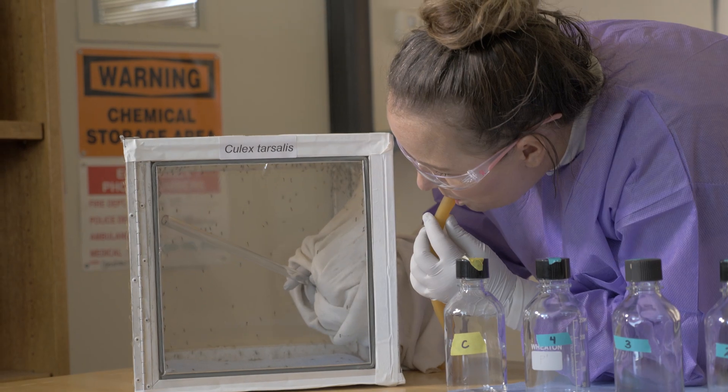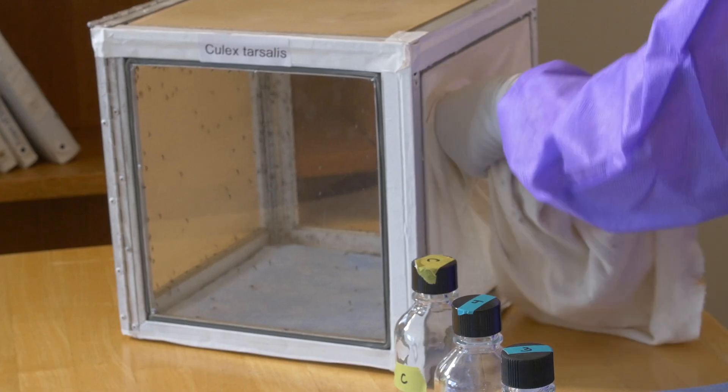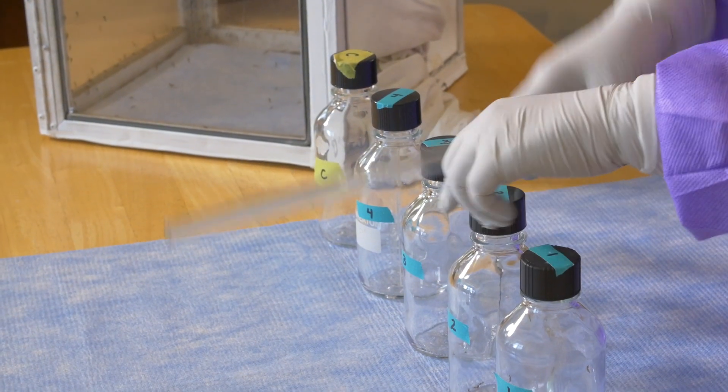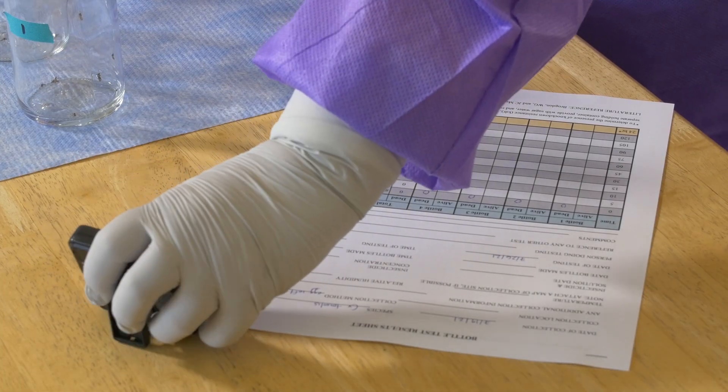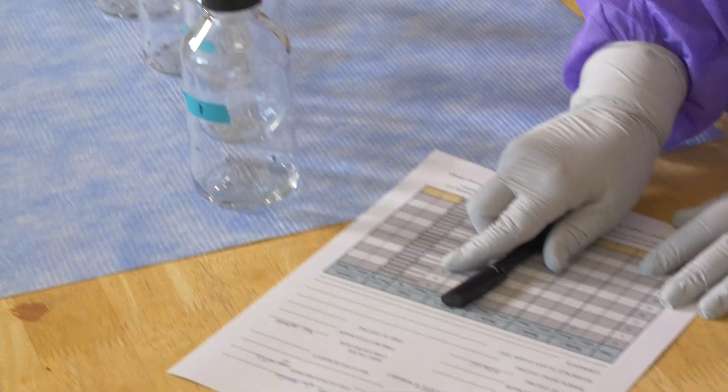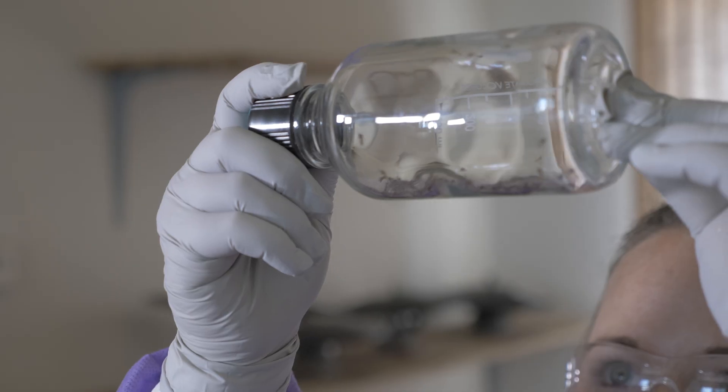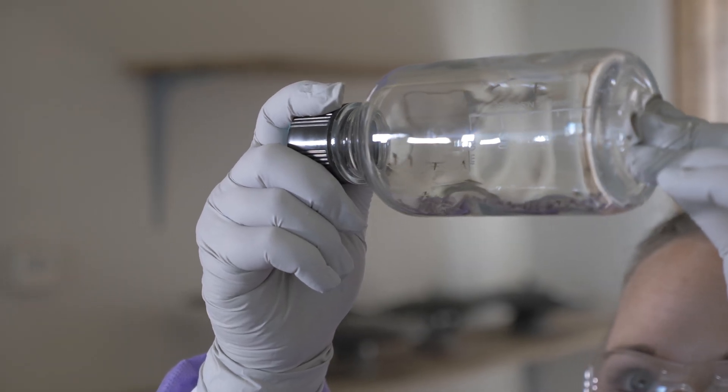Mosquitoes are then put into the bottle and observed for two hours. At selected time points during those two hours, the number of dead mosquitoes are counted. The test should be run for the entire two hours, unless all mosquitoes have died before the two hours has ended.